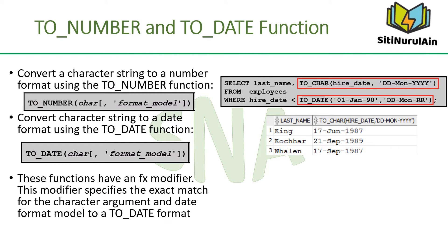You may want to convert a character string to either a number or a date. To accomplish this task, use the TO_NUMBER or TO_DATE functions. The format model you select is based on the previously demonstrated format elements. These functions have an FX modifier, which specifies the exact match for the character argument and date format model to a TO_DATE format. The SQL in the slide finds employees hired before 1990, using the RR date format, which produces the same results whether the command is run in 1999 or now.